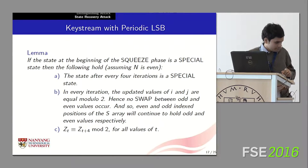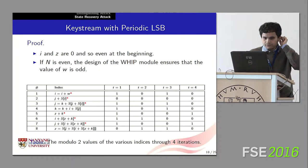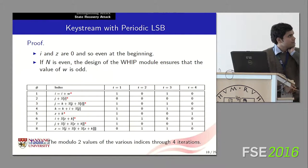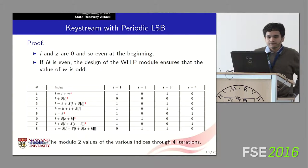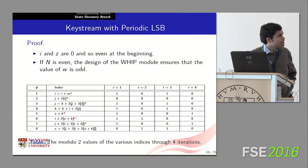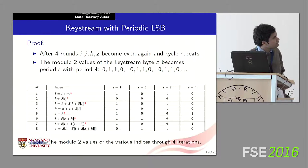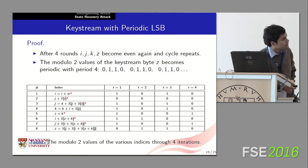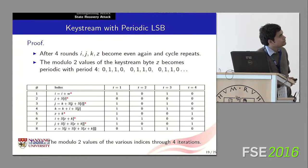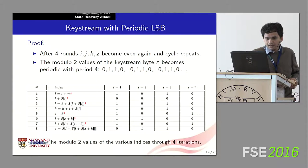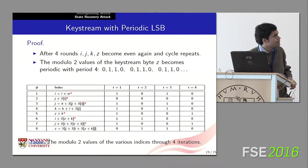Furthermore, when the state is special, the LSBs of the keystream bytes form a periodic sequence of period 4. The proof involves tabulating the modulo-2 values of all indices updated over 4 consecutive Spritz iterations. As you can see, I and J always have the same parity, and at the end of 4 cycles, the values of I, J, K, and Z become even again — so this cycle repeats every 4 iterations. The LSB of the output keystream bytes thus becomes a periodic sequence of period 4, repeating the pattern 0, 1, 1, 0, 0, 1, 1, 0, and so on.